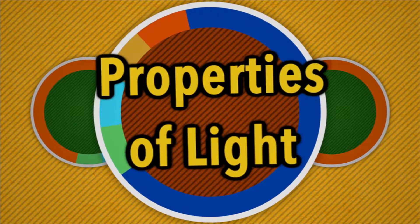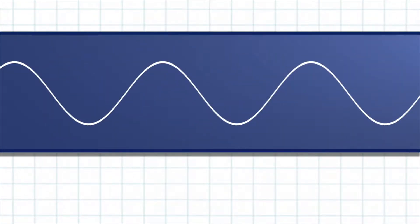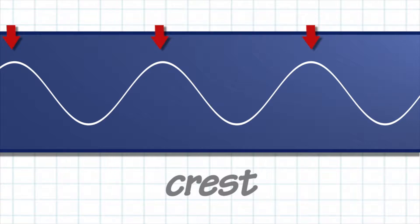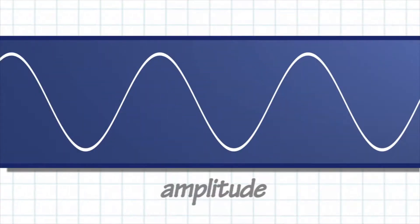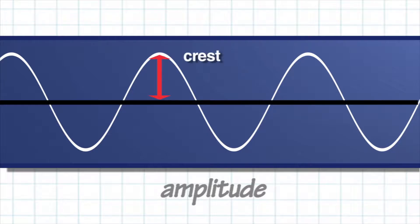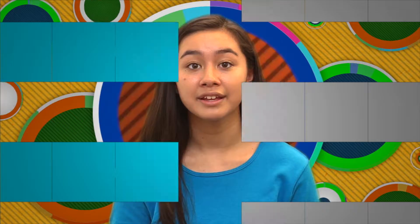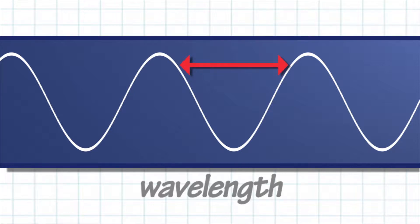Properties of light. Let's examine some properties of light waves by looking at a graphic of a wave. Waves go up and down with high points called crests and low points called troughs. The first property we are going to discuss is amplitude. We can measure amplitude by measuring the height of a wave — the distance between the center of the wave and the crest or the trough. Another property of a light wave is wavelength, determined by measuring the distance between two high points or two low points on a wave.